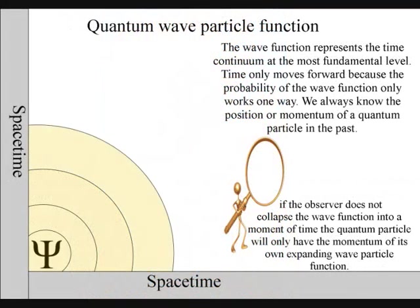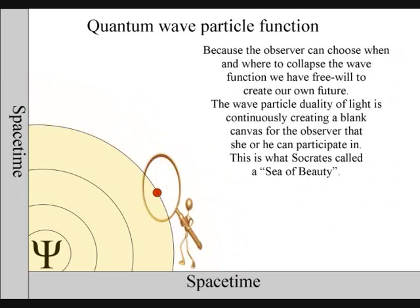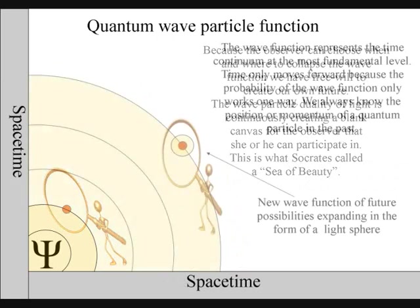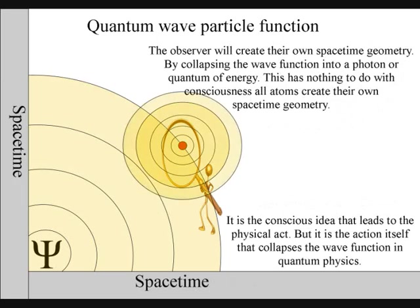All atoms create their own space-time geometry. But it is because life, in the form of an observer, can choose when and where to collapse a wave function, that we have free will. Life will create its own ripples in the fabric of space-time, forming its own broken symmetry of its own evolutionary path.